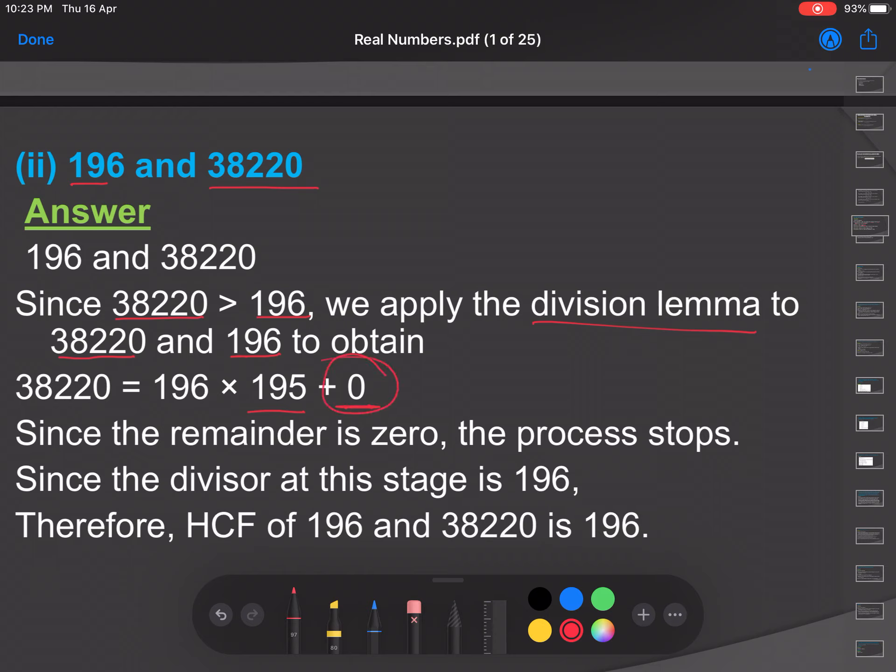This time we get remainder 0. Therefore we stop the process and the divisor at this stage is 196. Therefore HCF of these two numbers will be 196.